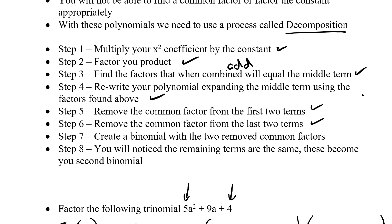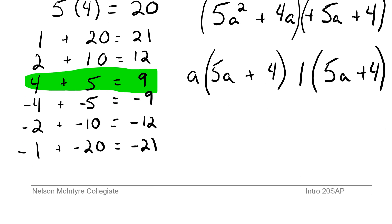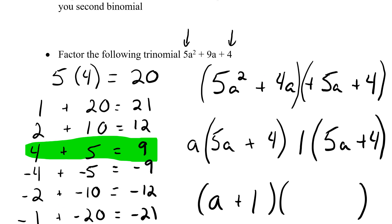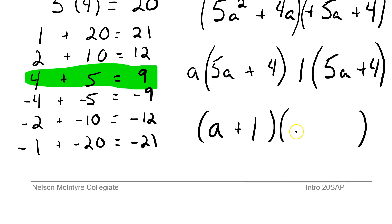We know we're factoring a trinomial so we'll end up with two binomials. The first binomial is created by combining the two factors we pulled out: a and positive 1, giving us (a plus 1). The remaining terms inside the brackets are the same — both are (5a plus 4) — so that becomes our second binomial. The factors we pulled out form the first binomial; the matching bracket forms the second. Our answer is (a plus 1)(5a plus 4).